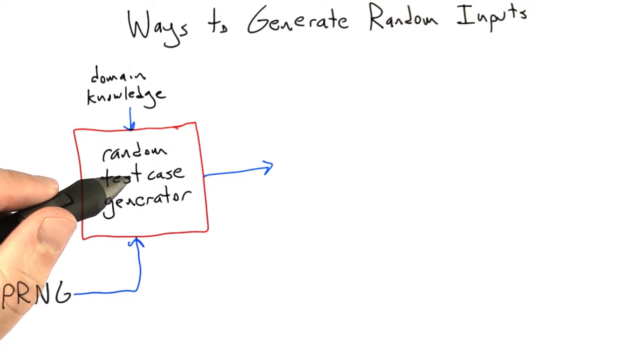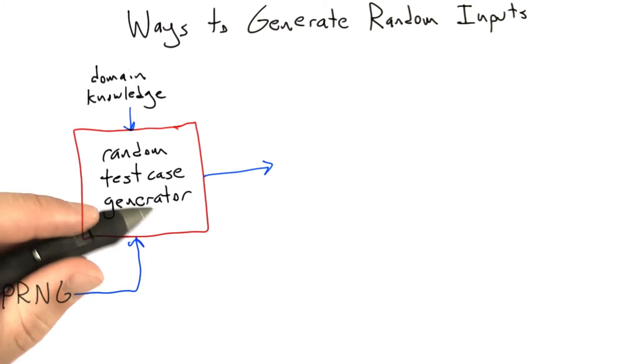Of course it's possible to carry that kind of logic farther, as in the example where we're testing a file system and we need to generate valid sequences of API calls, or testing a web browser where we need to generate well-formed HTML in order to test certain parts of the browser.